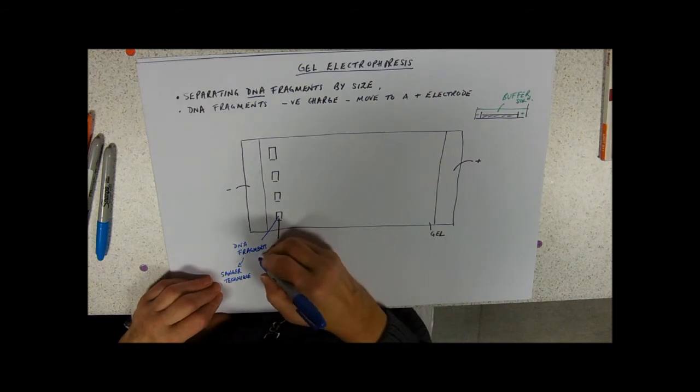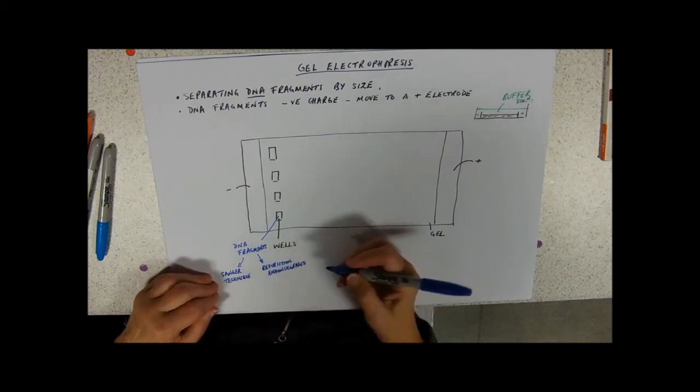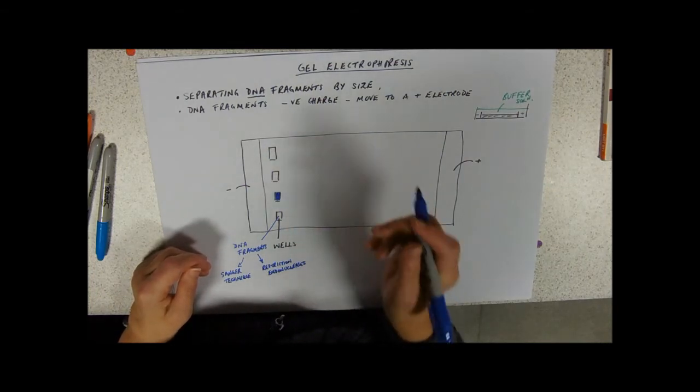We're using those from, say, using the Sanger technique, where you're stopping the DNA replication at different points to get different sized fragments. Or you can use restriction endonucleases, for example, if you're looking for a gene, or if you're doing a DNA fingerprint.